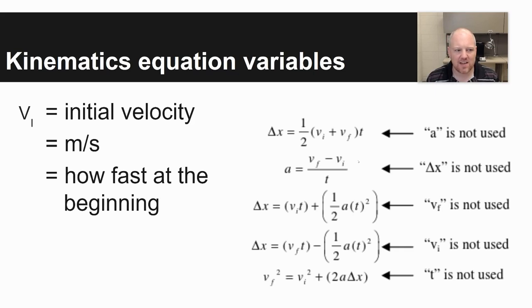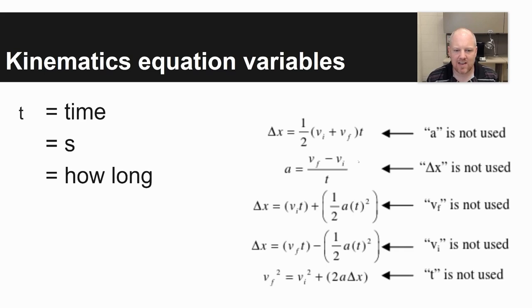Velocity initial, V sub I with a subscript I, is speed with direction at the beginning of some scenario, measured in meters per second. Velocity final, same units, how fast at the end. And time, just how long, measured in seconds.